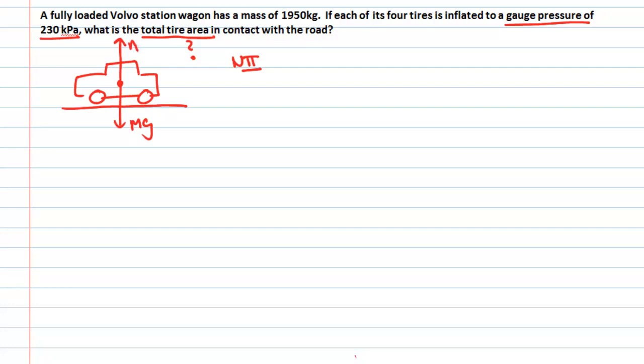That must balance the weight force acting downwards. So we can say that the magnitude of the normal force is going to be equal to the magnitude of the weight force mg. That means that there's no acceleration in the vertical direction. So the car is either stationary or it's travelling horizontally.